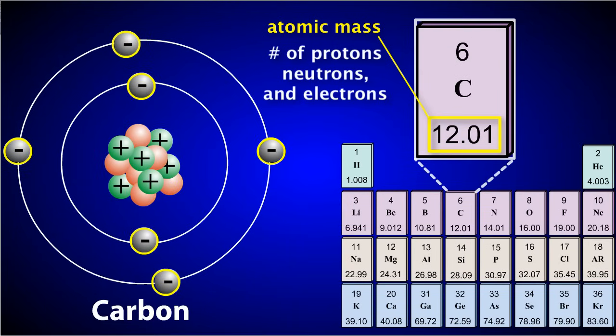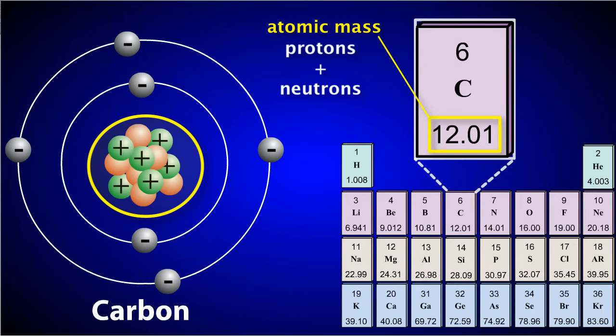However, since electrons are so small, their mass is assumed to be zero in most calculations. Therefore, the atomic mass of an atom is equal to the sum of its protons and neutrons.